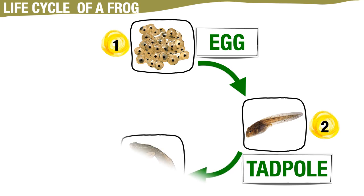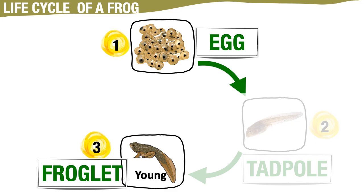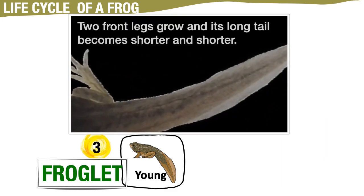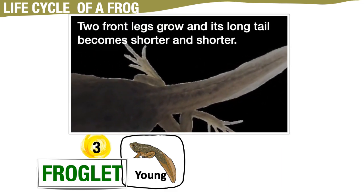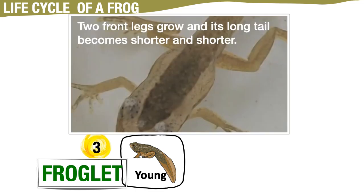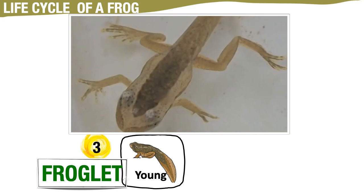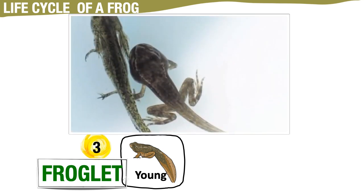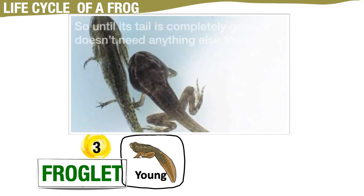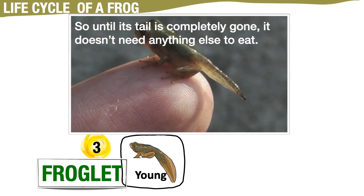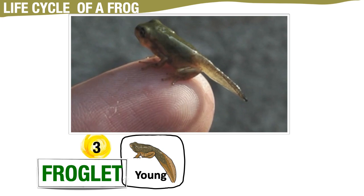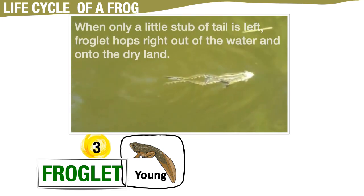From a tadpole, it will grow into a young one, which is called a froglet. During this stage, two front legs grow and its long tail becomes shorter and shorter. It uses the nutrients stored in its tail as food. So until its tail is completely gone, it doesn't need anything else to eat. Then when just a little stub of its tail is left, it hops right out of the water and onto dry land for the first time.